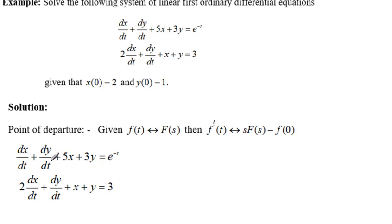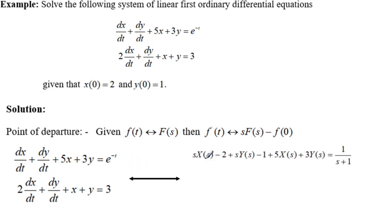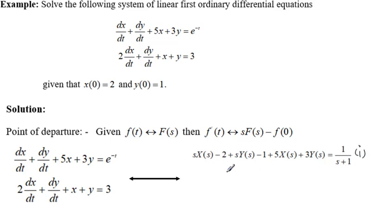Let's start with the first equation. Applying Laplace transform to the first equation, and applying the derivative formula, we get s multiplied by the Laplace transform of x minus 2 — which is the initial value of x. We do the same with y, then for 5x we apply Laplace transform to x multiplied by 5, and similarly for 3y. On the right-hand side, the Laplace transform gives 1 over s plus 1. This is our equation 1.